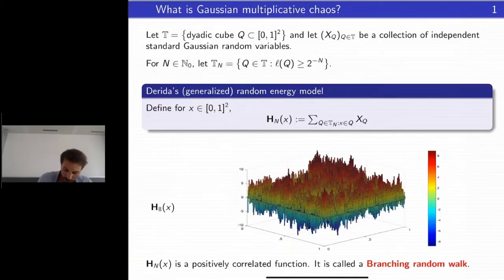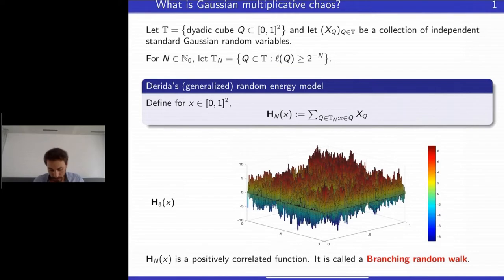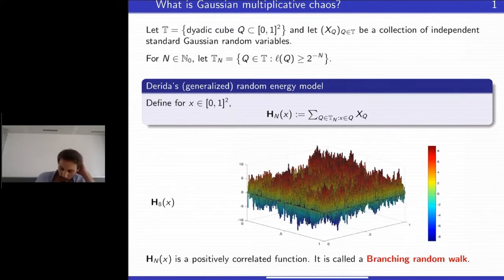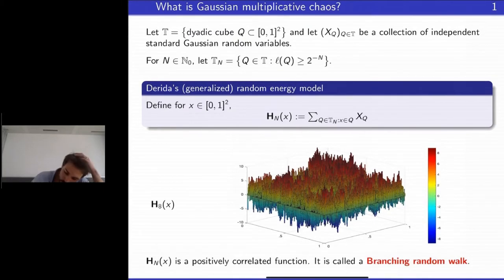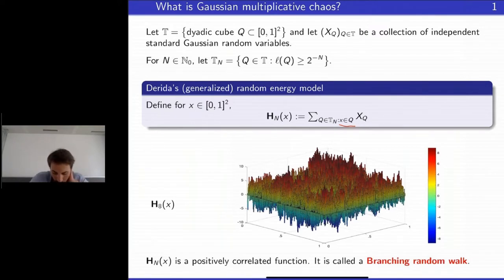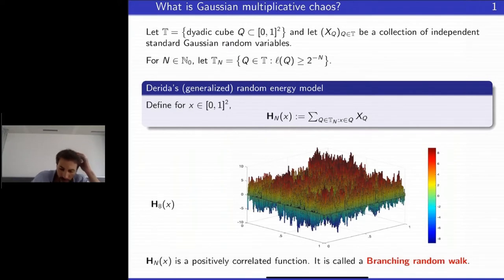Here is a picture of what this function looks like: this is h_5, so there are 2^5 cubes. The value of the function is discrete and doesn't take remarkably large values, but it alternates between negative and positive values quite quickly. For 2^8 cubes you can see that as the number of cubes tends to infinity it becomes a very rough, very spiky function. For a fixed x it is just a random walk — a sum of Gaussian random variables.